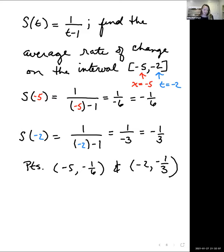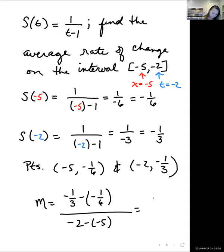So finding the average rate of change between those two points, we're just finding a slope. Negative one third minus negative one sixth all over negative two minus negative five. Negative one third plus one sixth all over negative two plus five, so it's going to give me three.